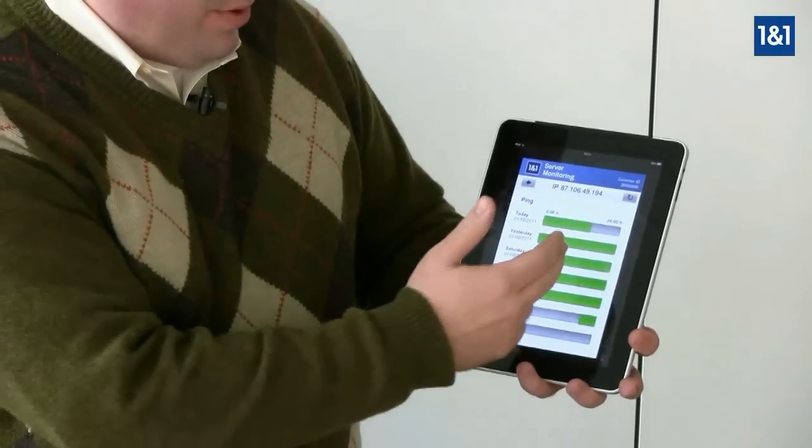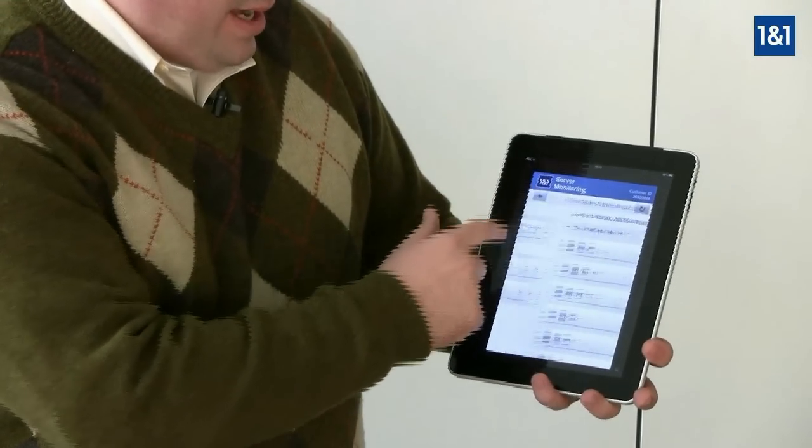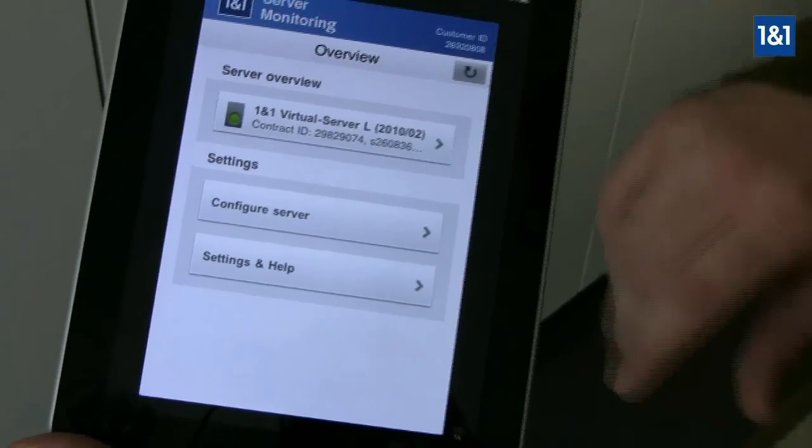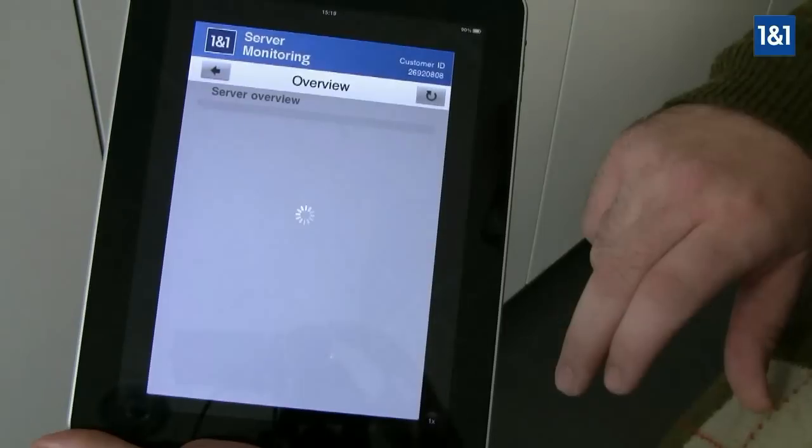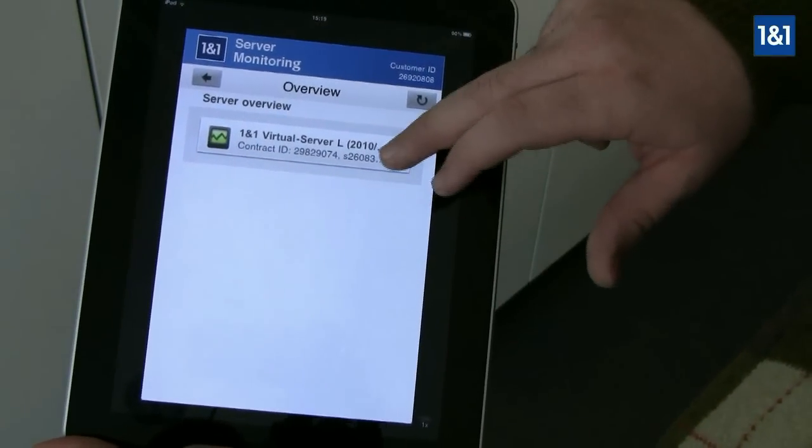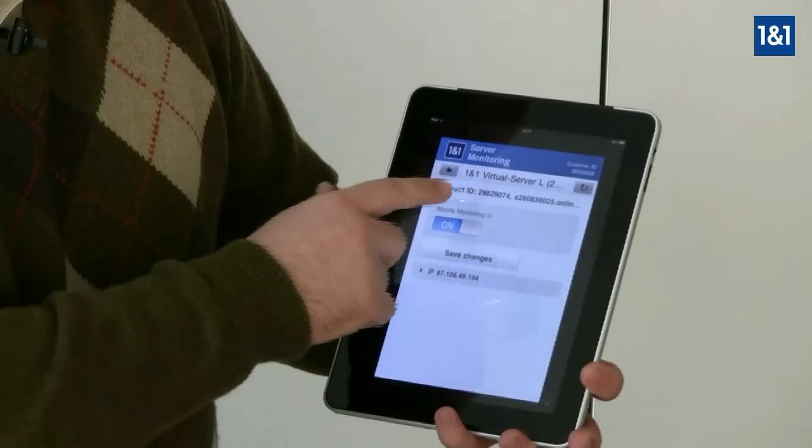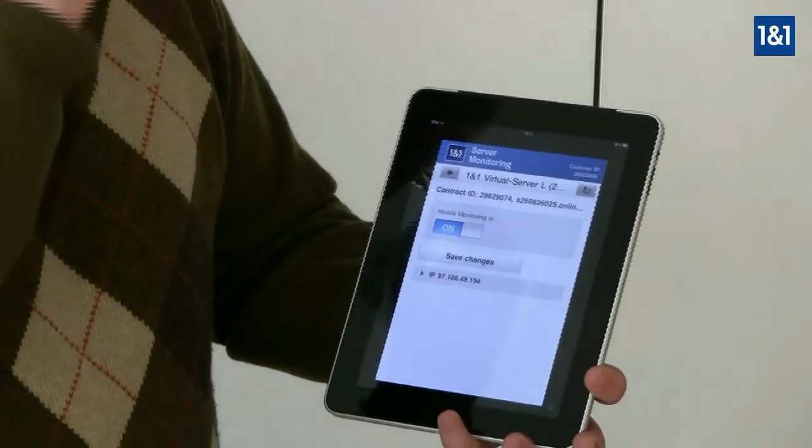As you can see, everything moving forward has been working correctly and we can come back here and you can actually go in and configure your server and change all the settings directly in the application. To configure the server, you would simply click on server configuration and you can see the server that you have on this contract ID.